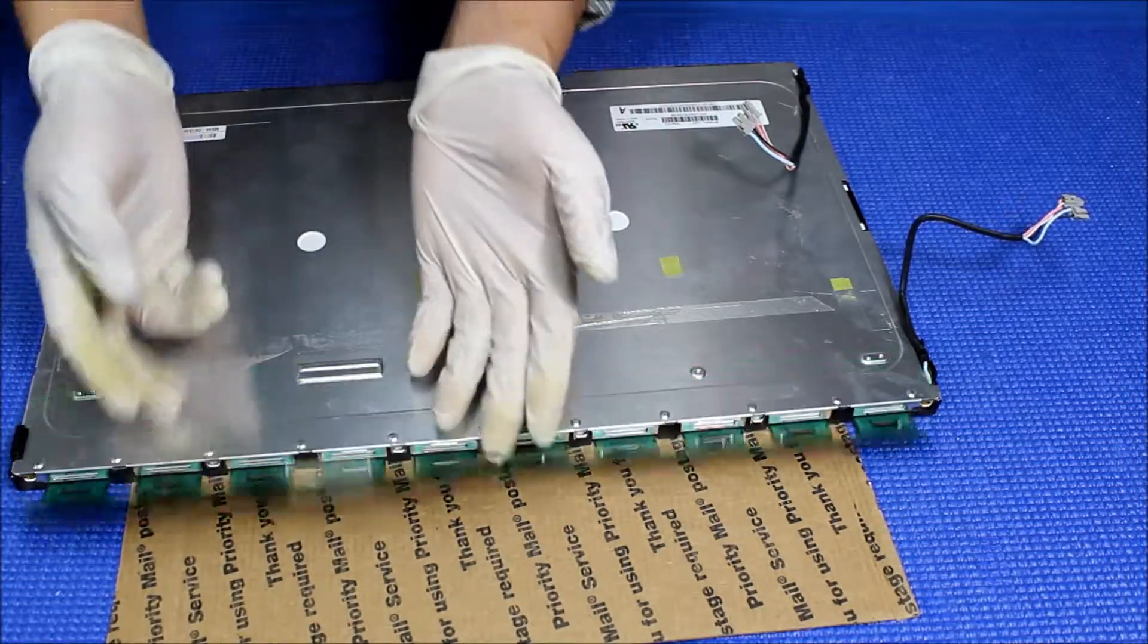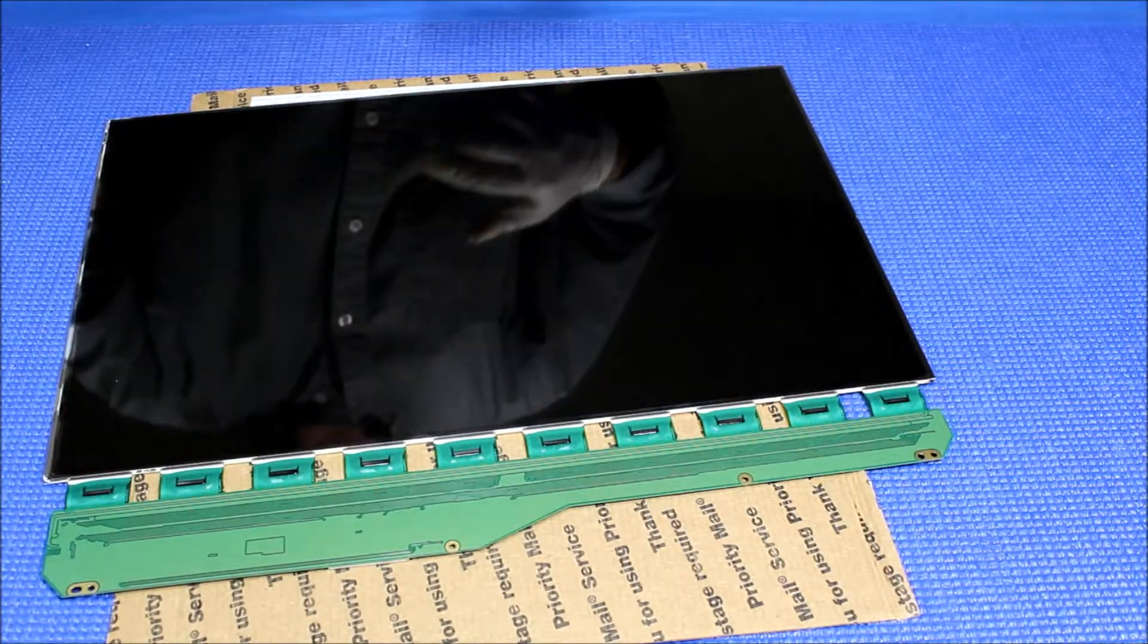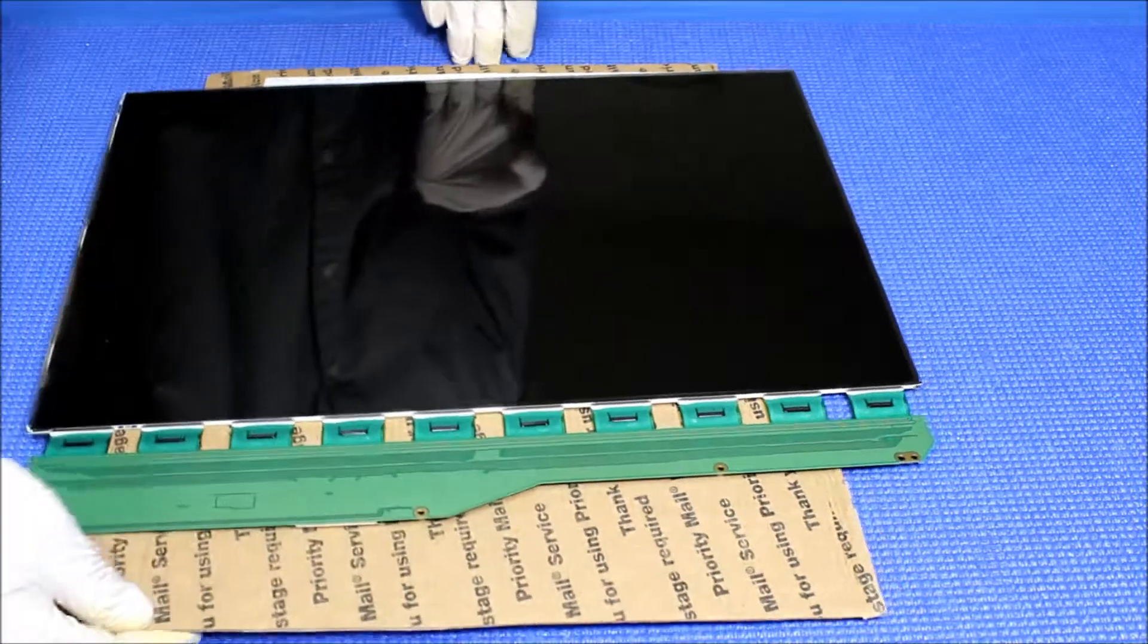So we're going to flip it over and just pull the wire out. We're going to set aside the liquid glass for a second and find a space here.